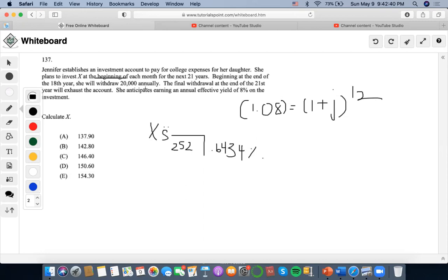At the end of the 18th year, she will begin withdrawing $20,000 annually. The final withdrawal will be at the end of the 21st year, so four years will elapse with annual withdrawals.